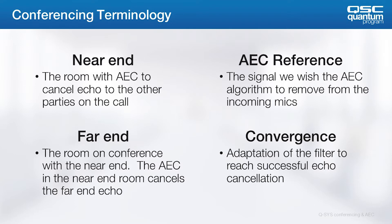The far end is the remote party in my conference. The AEC in my system as the near end is to benefit them. The AEC algorithm doesn't know what signal it should be looking for and attempting to cancel. We do this by connecting that signal to the AEC reference pin of the processing block.